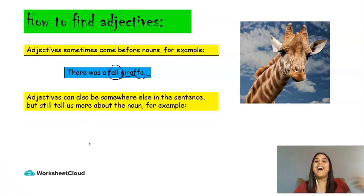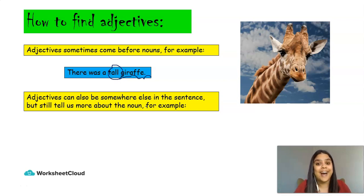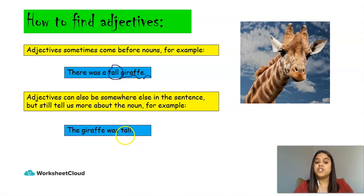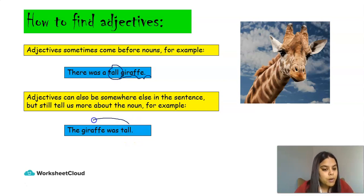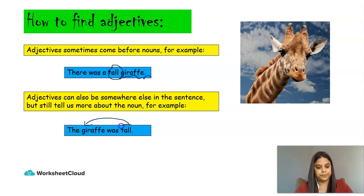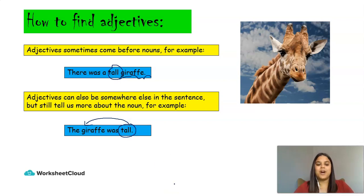Adjectives can also be somewhere else in the sentence, but still tell us more about the noun. Sometimes the adjective isn't before the noun, and then you say — uh oh, how am I going to find this adjective? We look at our sentence. For example: 'The giraffe was tall.' Instead of saying 'there was a tall giraffe,' now the sentence says 'the giraffe was tall.' But the word 'tall' is still telling me more about 'giraffe', so it is still an adjective.